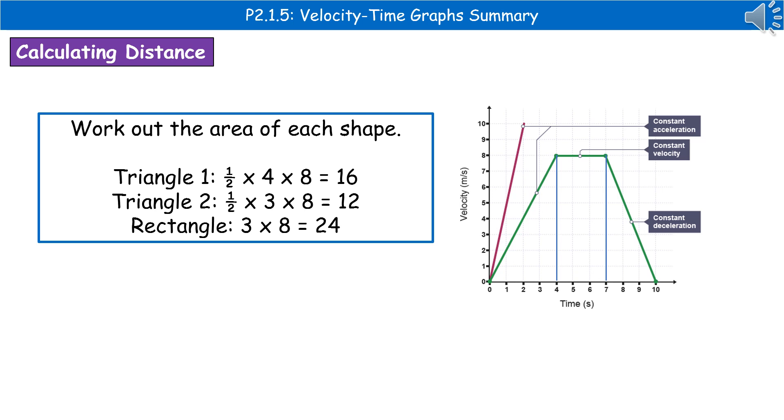Triangle 2 is half times base times height, half times 3 times 8, which gives us 12. The rectangle is base times height, 3 times 8, which is 24.